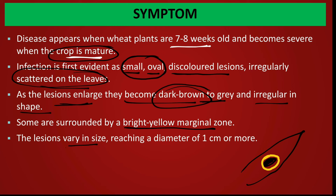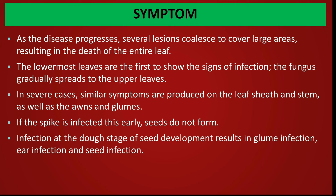As lesions enlarge, they become dark brown to grey and irregular in shape. Some are surrounded by a bright yellow margin — the tissue around the infection turns yellow. Lesions reach up to 1 cm in diameter. Several lesions coalesce and cover larger areas, resulting in death of the entire leaf. Lower leaves are first to show infection; the fungus gradually spreads to upper leaves.